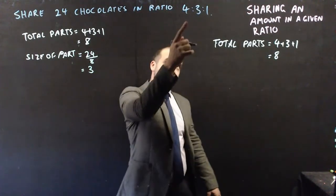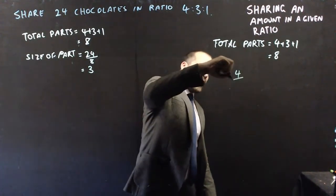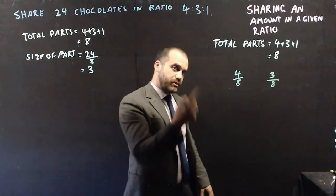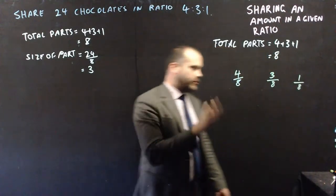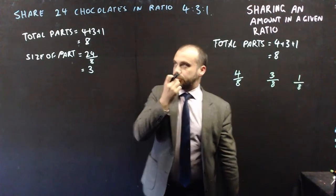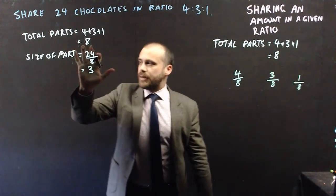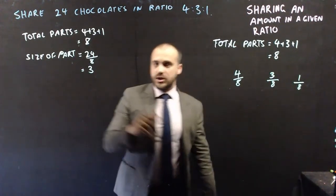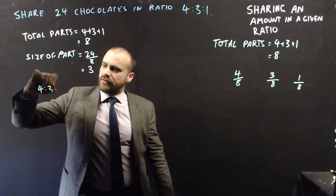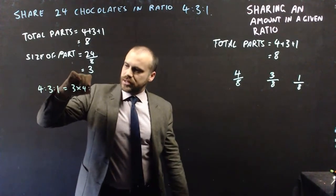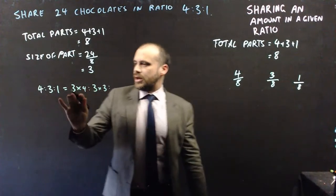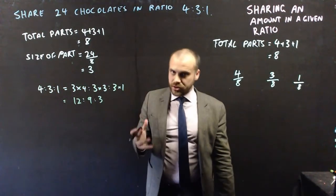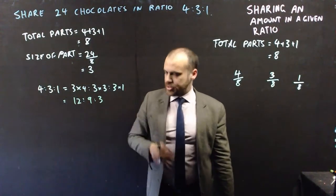On the fractions side, one person gets 4 eighths of the chocolate, another gets 3 eighths, and the third gets 1 eighth. On the parts side, we take the ratio 4 to 3 to 1 and multiply the whole thing by 3, giving us 12 to 9 to 3. So the first person gets 12 chocolates, the second gets 9, and the third gets 3.